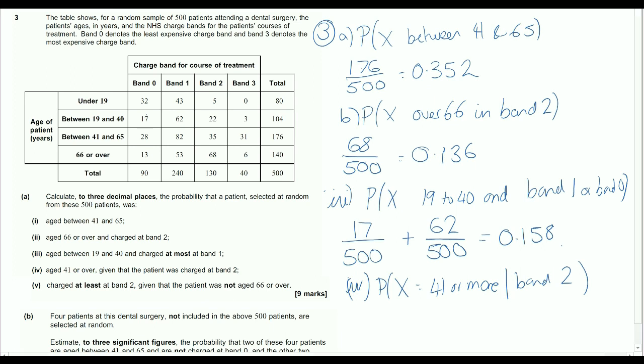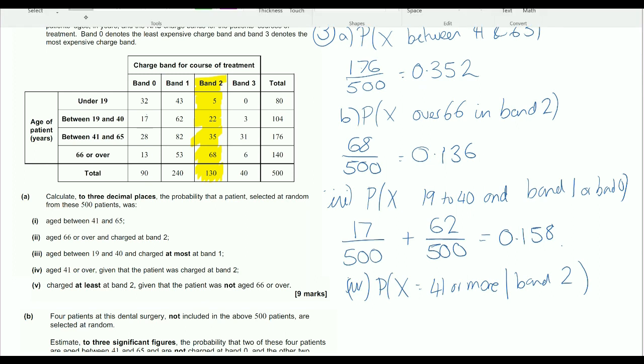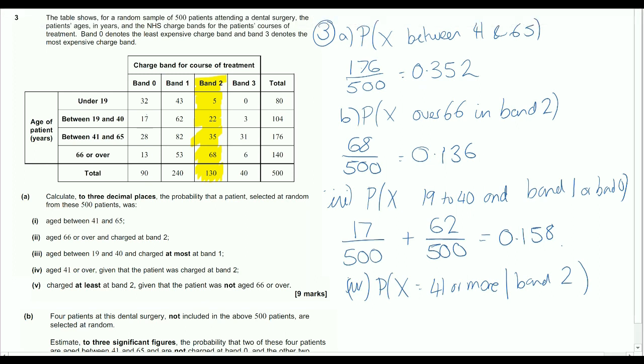So this is when we have a given situation that we end up changing our denominator. So what are we looking for then? We're looking only for patients that are in band 2. So let's just highlight band 2. So this is the section of the diagram that we are after. So in this case, we are saying 41 or more. So it's either these people or these people. So we've got our 35 out of, seeing as we know they're in band 2, so out of the 130, or 68 out of the 130.